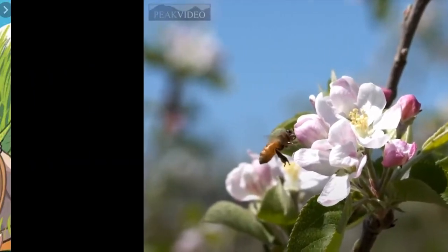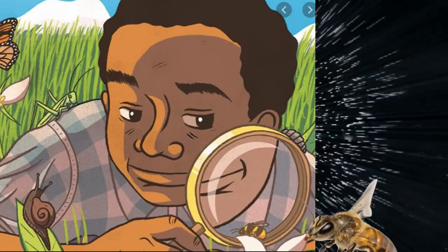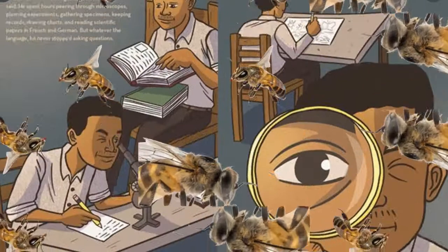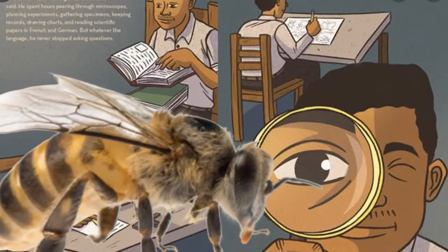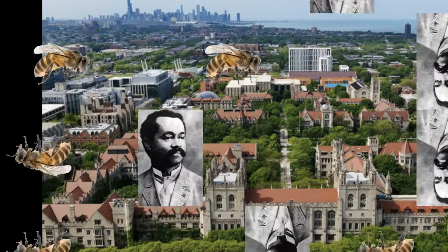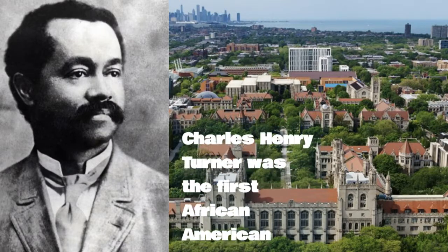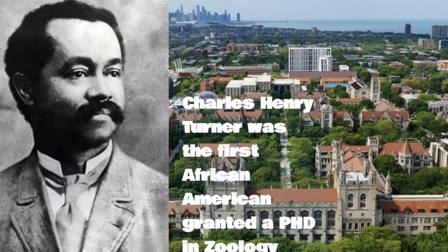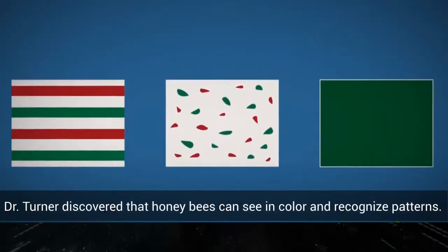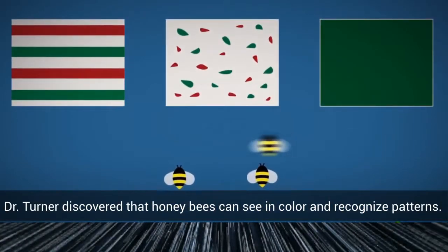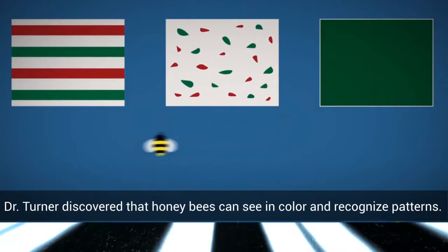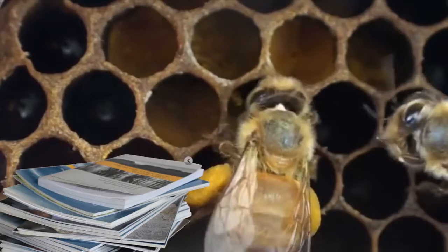From an early age, Charles Henry Turner took an interest in insects. He read so many books about bugs, but the books did not satisfy his curiosity, so he began to study the natural world around him. Charles Henry Turner was the first African-American granted a PhD in zoology from the University of Chicago. His research showed evidence that honeybees can see colors and patterns — he was the first scientist to prove this.